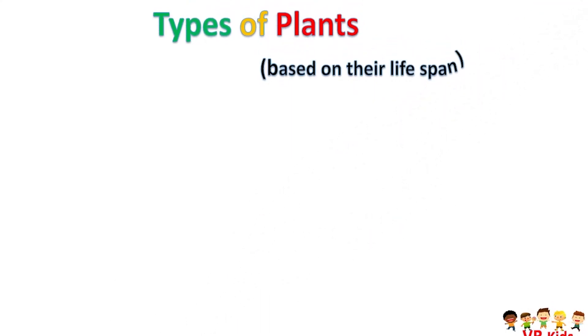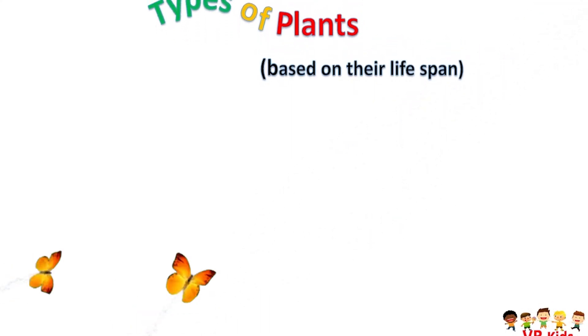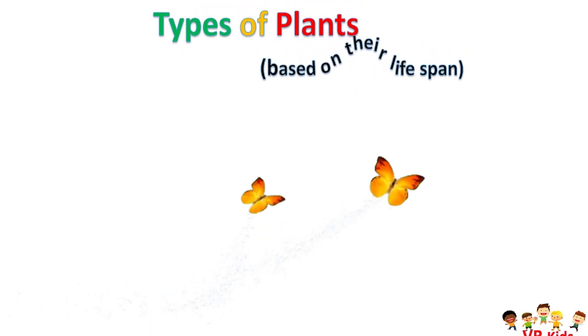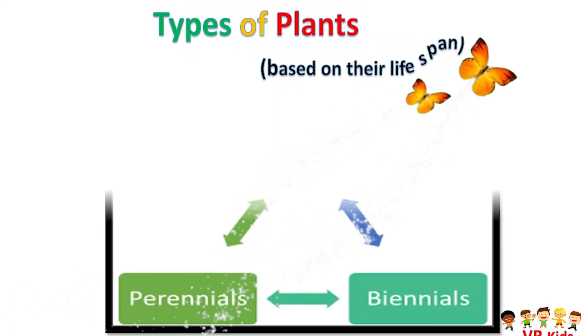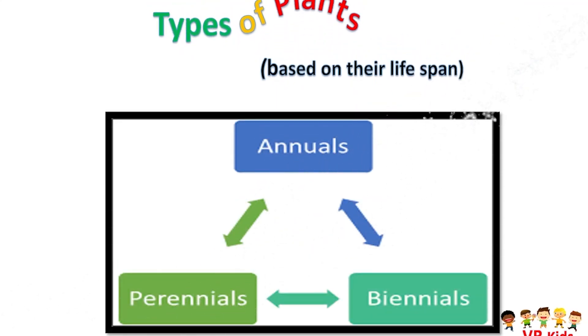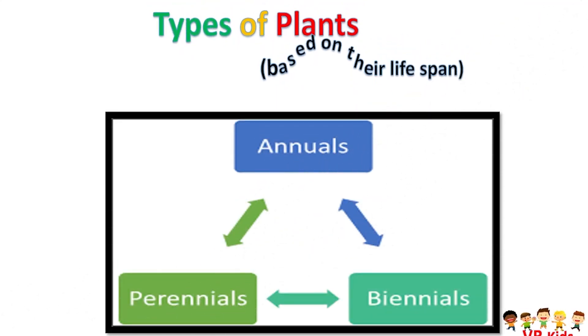Now let us see plants classified based on their life span: annuals, biennials, and perennials.